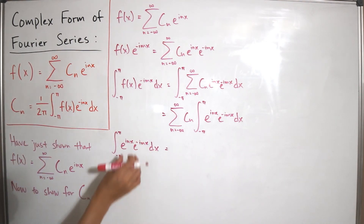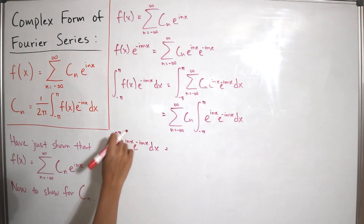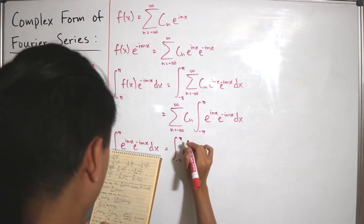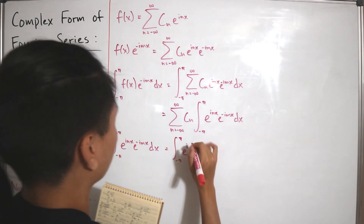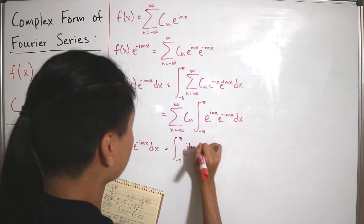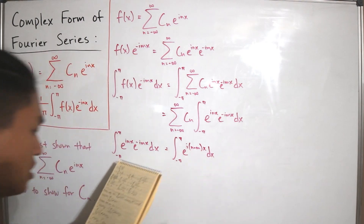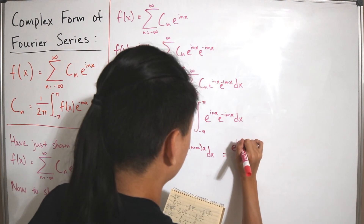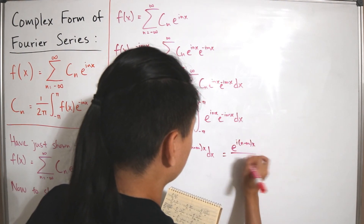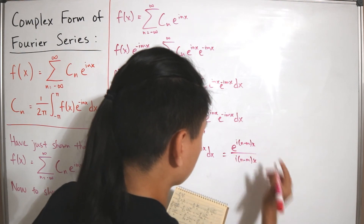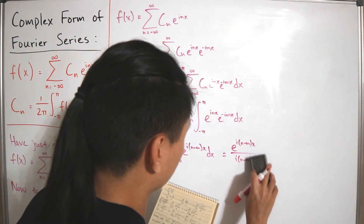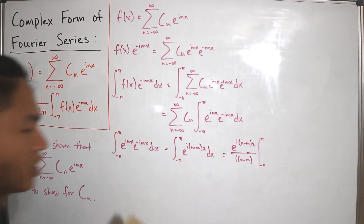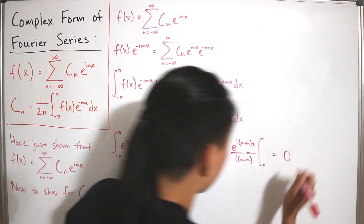Now we evaluate the key integral. Since e to the inx and e to the negative imx share the same base, we combine exponents to get the integral of e to the i times (n minus m) times x dx from negative π to π. Applying integration, this gives e to the i times (n minus m) times x divided by i(n minus m), evaluated from negative π to π. It is straightforward to show this equals zero, but only when n does not equal m.